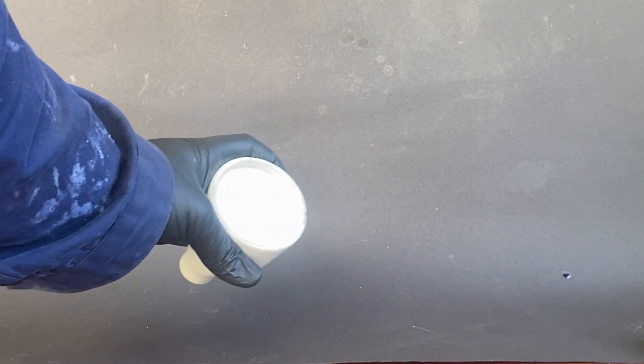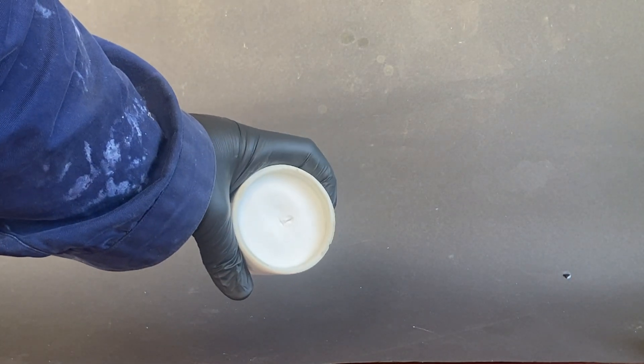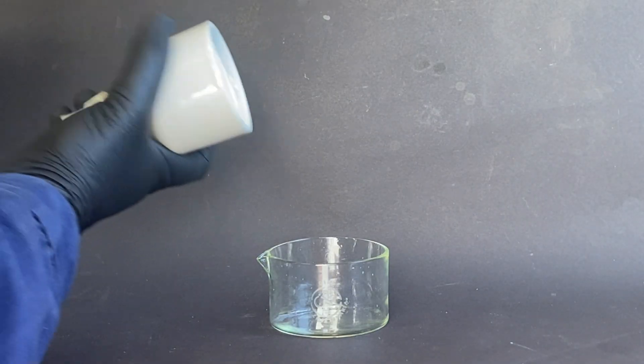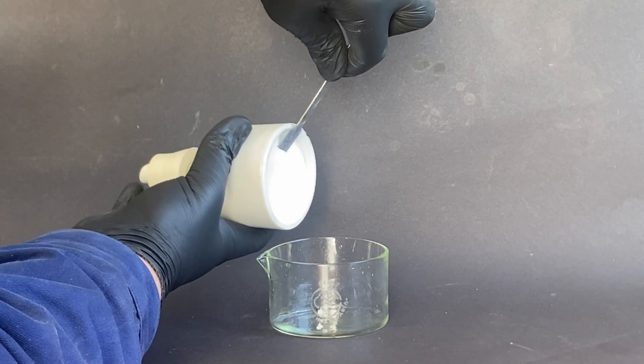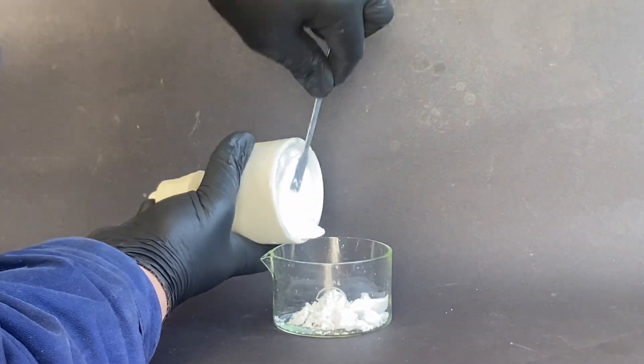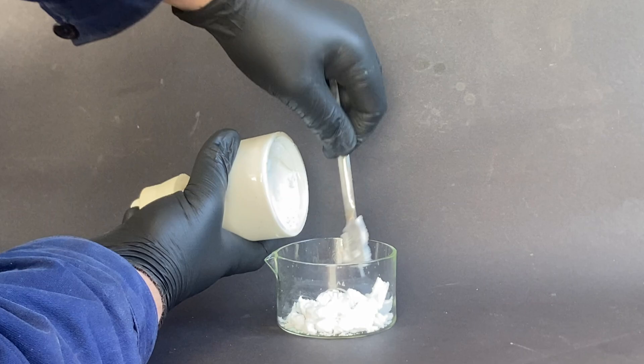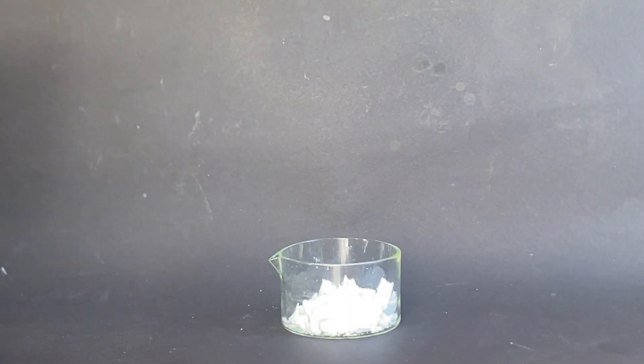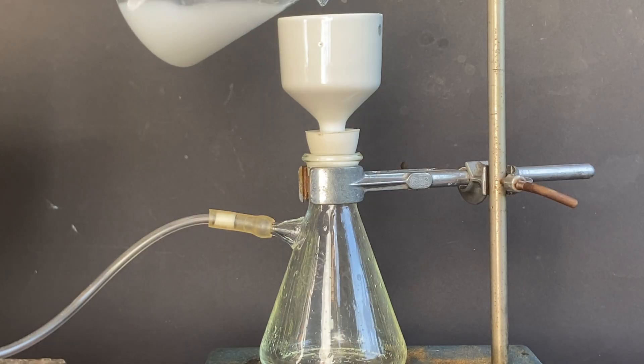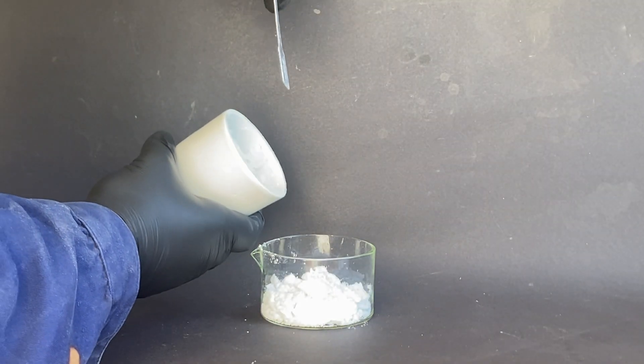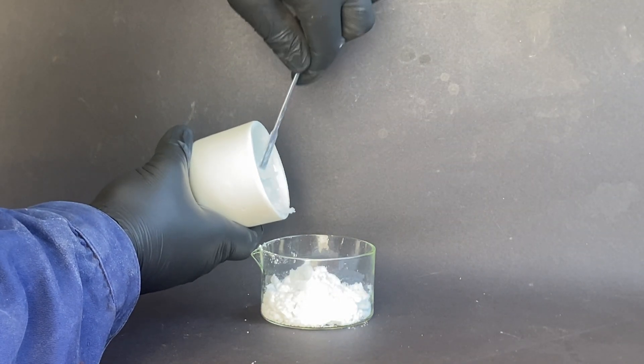Next I removed some of the boric acid into a dish and filtered the rest of the solution, making sure not to drown my pump again. After the filtering was complete I added the boric acid to the rest.